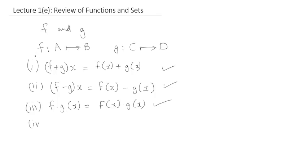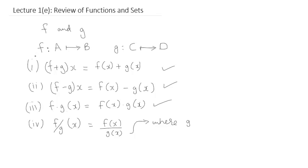The final operator we'll discuss here is the division operator on a value x. This would be equal to f of x divided by g of x. But we need to put a certain condition such that the denominator is never zero, which means the function g of x will never attain the value zero.